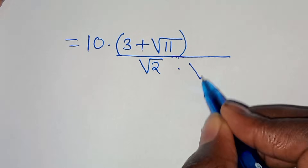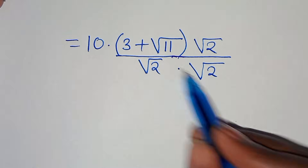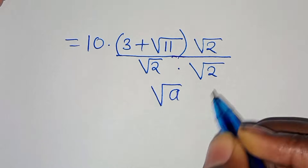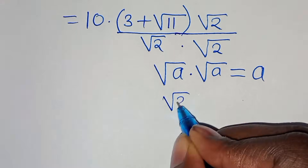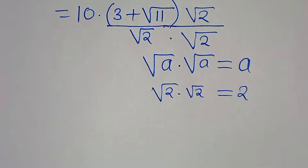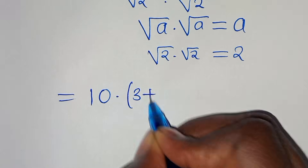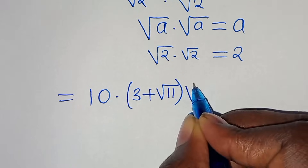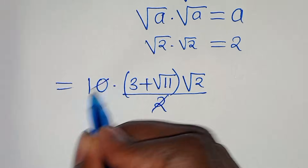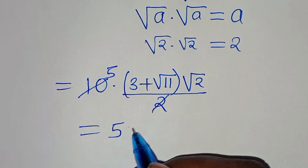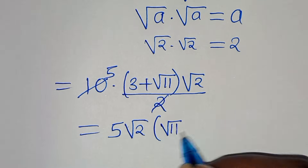The next step is to rationalize the denominator by multiplying by square root of 2 over square root of 2. Since square root of 2 times square root of 2 equals 2, we get 10 multiplied by the quantity 3 plus square root of 11, times square root of 2, all divided by 2. Simplifying, 10 divided by 2 equals 5, so we have 5 multiplied by square root of 2 times the quantity square root of 11 plus 3.